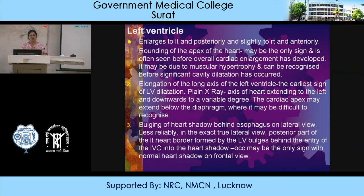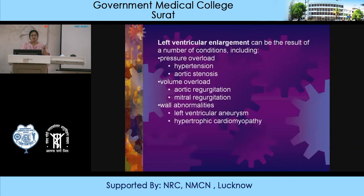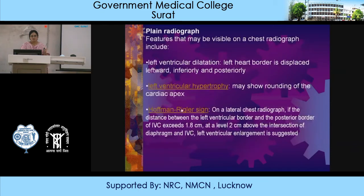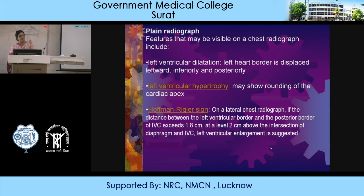On the lateral view, there is bulging of the heart shadow behind the esophagus. The posterior part of the left heart border formed by the left ventricle will bulge behind the entry of the IVC into the heart shadow, and occasionally this may be the only sign with a normal heart shadow on frontal view. Left ventricular dilatation leads to the left heart border displaced leftward, inferiorly, and posteriorly. The Hoffman-Rigler sign: on a lateral radiograph, if the distance between the left ventricular border and the posterior border of the IVC exceeds 1.8 cm (measured at a level 2 cm above the intersection of diaphragm and IVC), that means the left ventricle is enlarged.